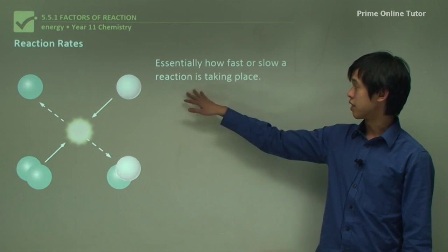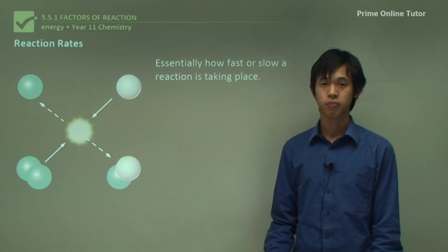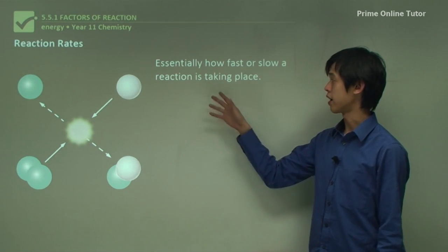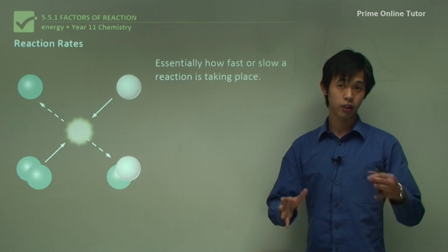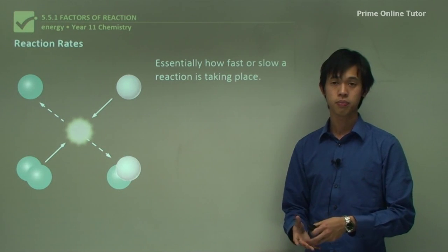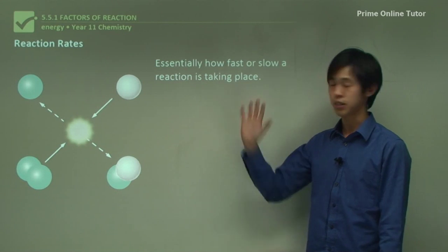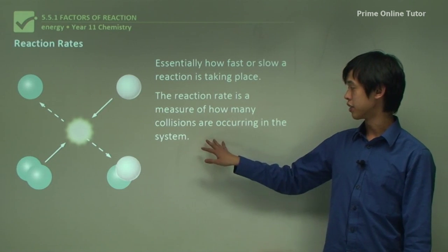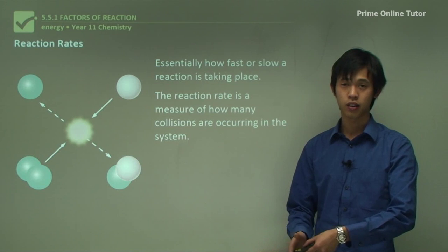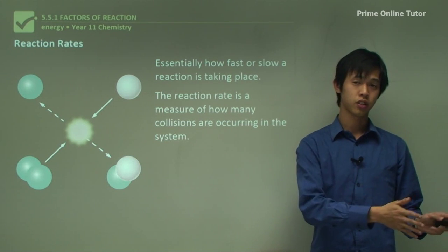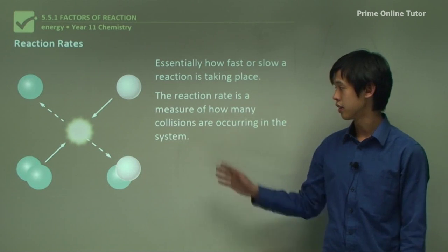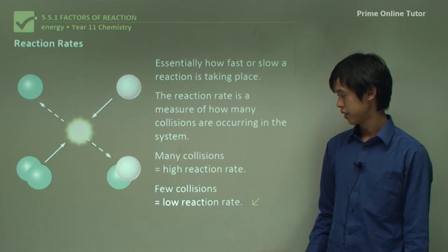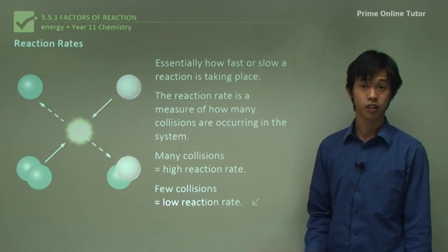How fast or slow a reaction is taking place is what we call the reaction rate. Basically it's how fast these reactions occur — how quickly chemicals are being consumed or converted into another chemical. It can also be used to measure how many collisions are occurring in the system. Many collisions means a high reaction rate; few collisions means a low reaction rate.